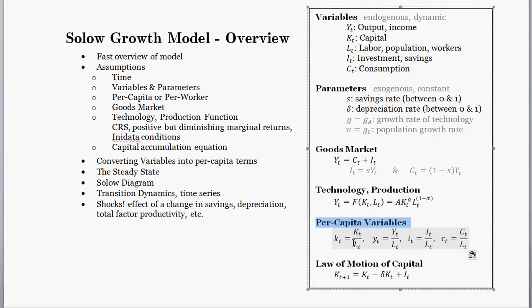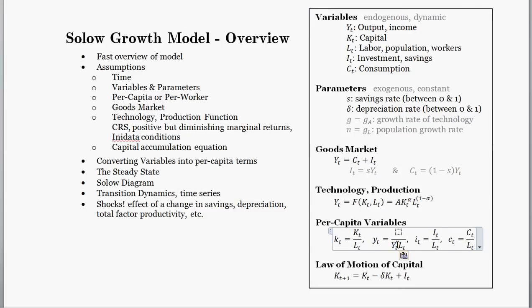Now let's turn all these variables into per capita values. Note that I mean per capita — per worker — not per capital. Notationally, lowercase k, y, i, and c correspond to per capita values of each aggregate variable. Per capita capital is aggregate capital K divided by the labor force L. Per capita output is aggregate output Y divided by the labor force. Per capita investment is aggregate investment divided by the workforce, and per capita consumption is total consumption divided by the workforce.